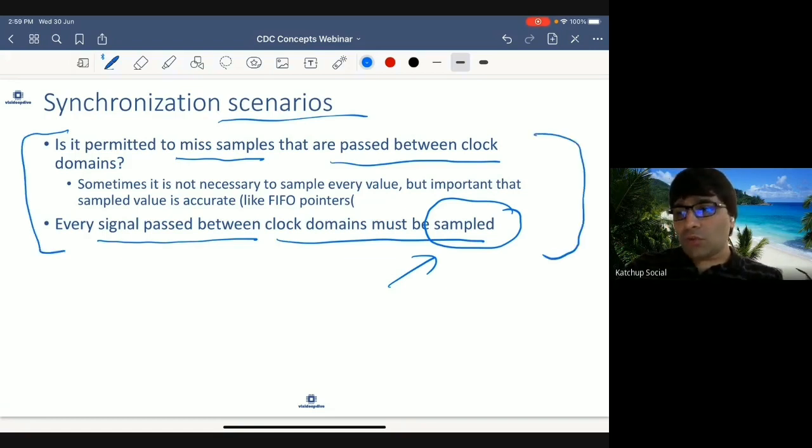One, in which you want to capture each and every data which is transmitted. Two, where you don't want to capture each and every data which is transmitted, what you want to ensure is that whatever value is captured is accurate. And one example of that where you want value to be accurate, but may not want to capture all data, is FIFO pointers.